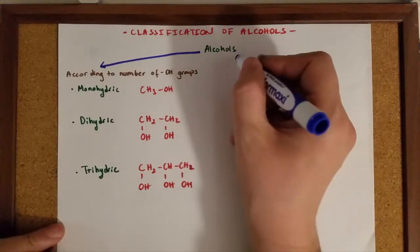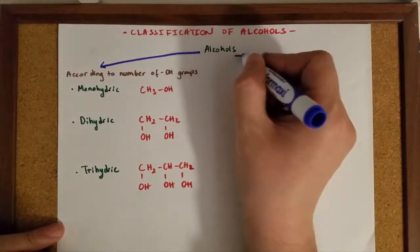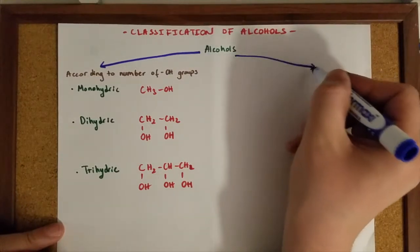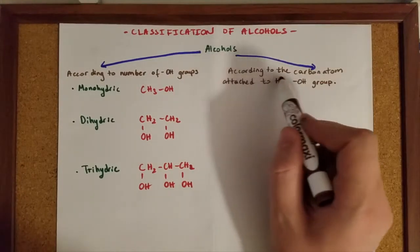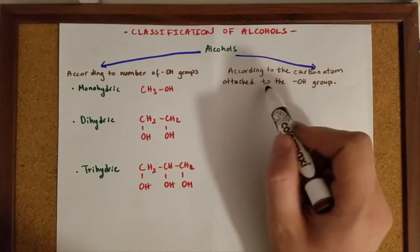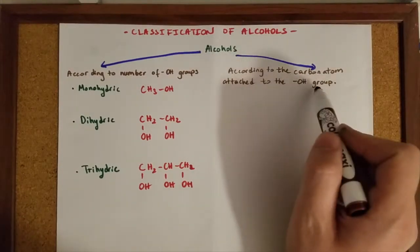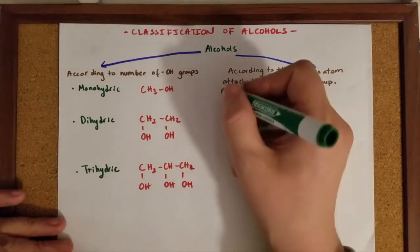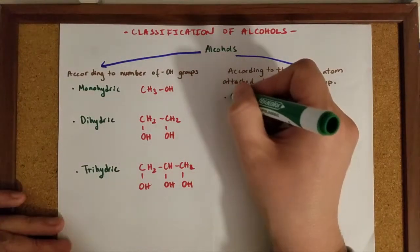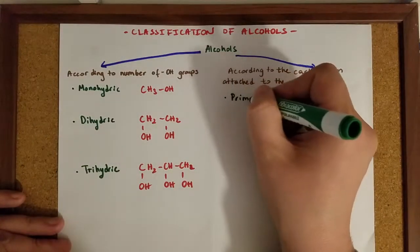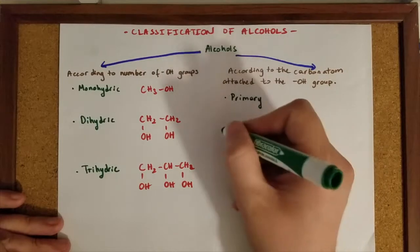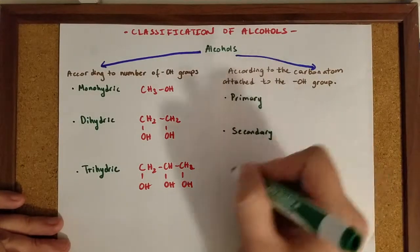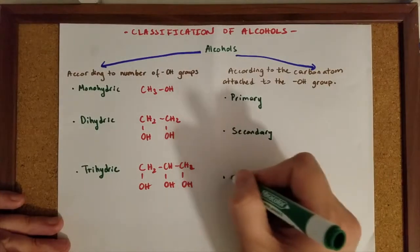The second way of classification of alcohols is according to the carbon atom attached to the OH group. In this classification, alcohols are either primary, secondary, or tertiary.